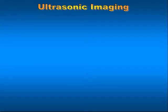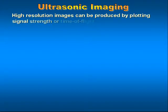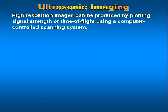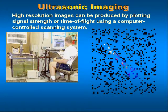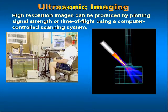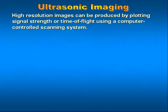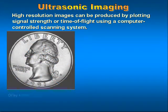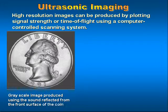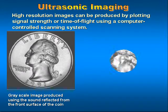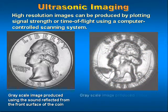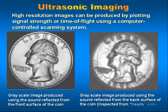Ultrasonic imaging. Today's technology in ultrasonic imaging allows high-resolution images to be produced by plotting signal strength or time of flight using a computer-controlled scanning system. On the left is a grayscale image of a quarter produced using sound reflected from the front surface of the coin. On the right is a grayscale image produced using sound reflected from the back surface of the coin, inspected from the head side.